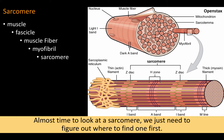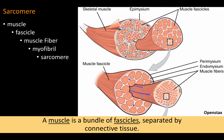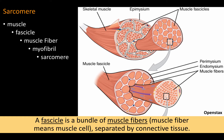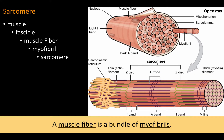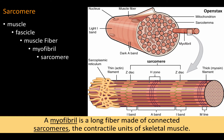Almost time to look at a sarcomere — we just need to figure out where to find one first. A muscle is a bundle of fascicles, separated by connective tissue. A fascicle is a bundle of muscle fibers. Muscle fiber means muscle cell, separated by connective tissue. A muscle fiber is a bundle of myofibrils. A myofibril is a long fiber made of connected sarcomeres, the contractile units of skeletal muscle.